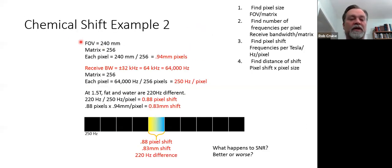Example number two. Step number one has not changed. Field of view divided by matrix, we haven't changed anything here. So we still have a 0.94 millimeter shift. Here's what we are going to change now.